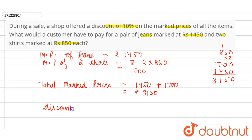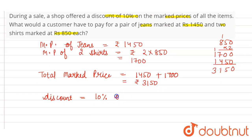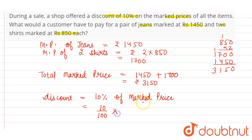Now, the discount percentage is 10 percent. The discount on the total marked price of rupees 3150 is calculated as 10 percent of 3150. So the discount is equal to rupees 315.